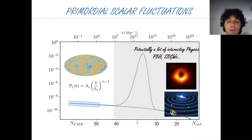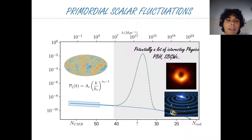It's very tempting to pursue this because it leads to potentially a lot of interesting physics. In fact, this enhancement of the curvature fluctuation will eventually lead, during radiation domination, to primordial black holes or to a stochastic background of gravitational waves potentially detectable by LISA.